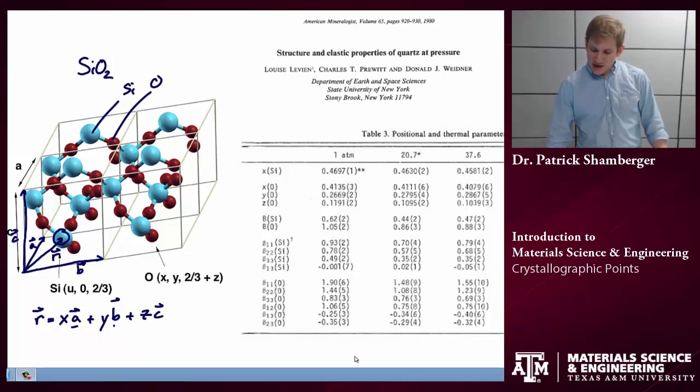In this case, A, B, and C are our principal lattice vectors. X, Y, and Z are the fractional coordinates. How much of lattice vector A, how much of lattice vector B, how much of lattice vector C do we need to add together to get the position of this particular atom?